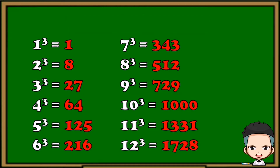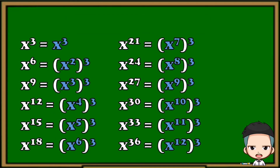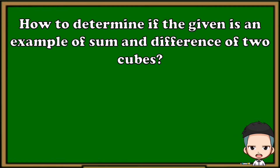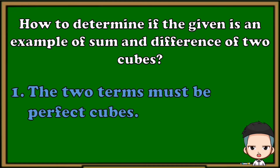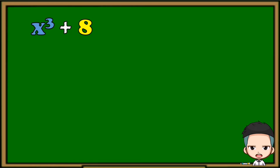Take a look at these perfect cubes and familiarize yourself. When a number is multiplied by itself three times, the result is a perfect cube. For a variable, if the exponent is divisible by 3, it is a perfect cube. To determine if a given expression is an example of sum and difference of two cubes, the two terms must both be perfect cubes.